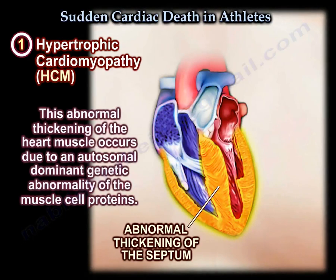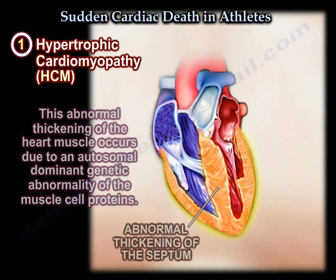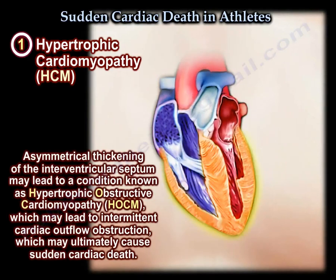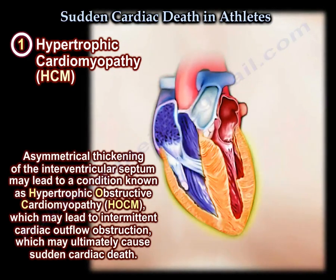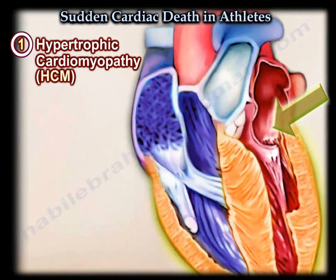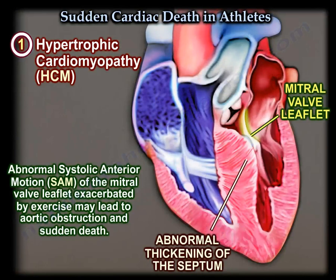This abnormal thickening of the heart muscle occurs due to an autosomal dominant genetic abnormality of the muscle cell proteins. Asymmetrical thickening of the interventricular septum may lead to a condition known as hypertrophic obstructive cardiomyopathy, which may lead to intermittent cardiac outflow obstruction. The abnormal systolic anterior motion of the mitral valve leaflet, exacerbated by exercise, may lead to aortic obstruction and sudden death.